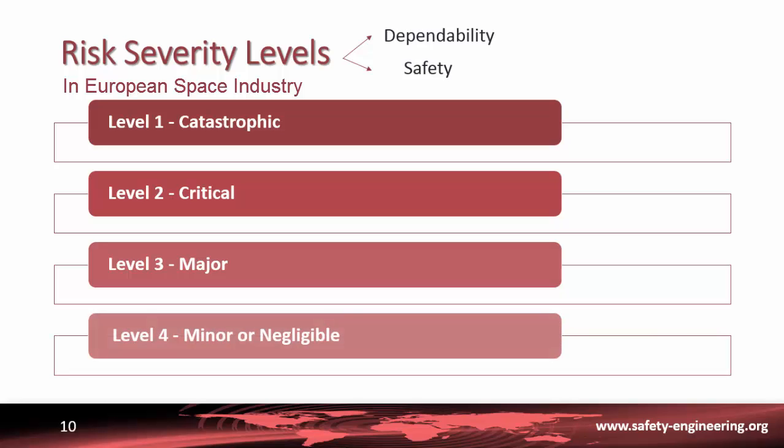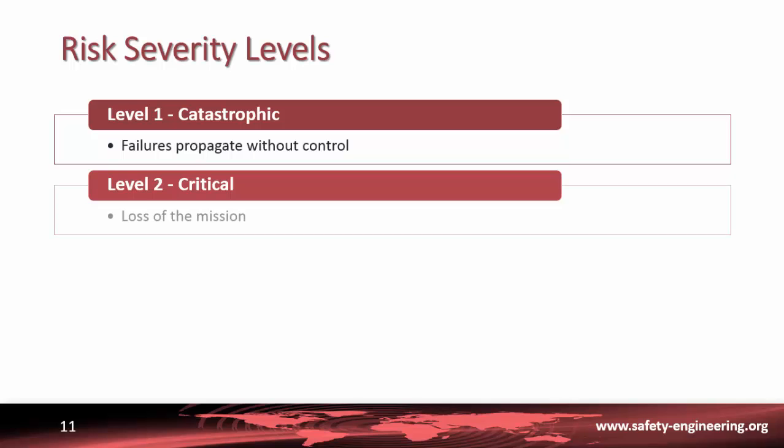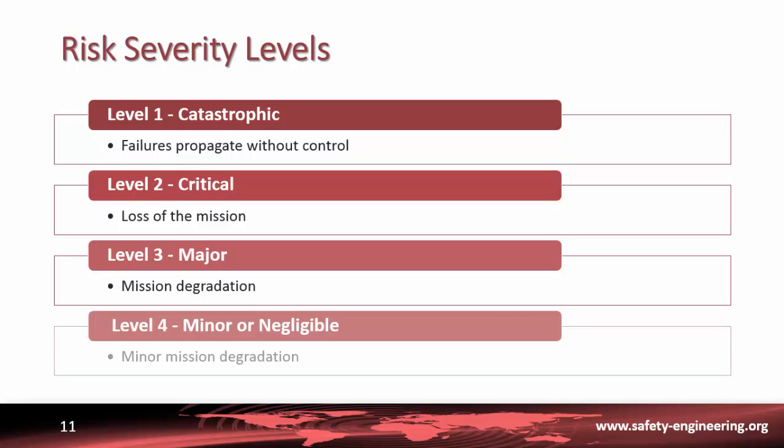The preliminary risk analysis should be done from a dependability and safety point of view. Here, we will only focus on the dependability events. From the dependability perspective, Catastrophic risk would refer to failures that could propagate without control. A critical risk would imply the loss of the mission. A major risk would mean major mission degradation. And finally, a minor or negligible risk would mean minor mission degradation or any other effect.